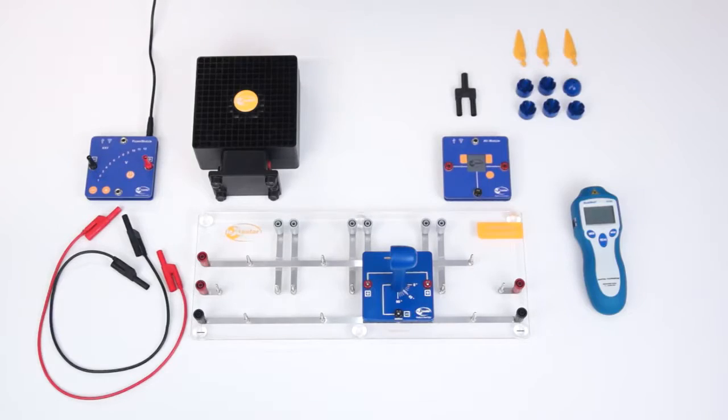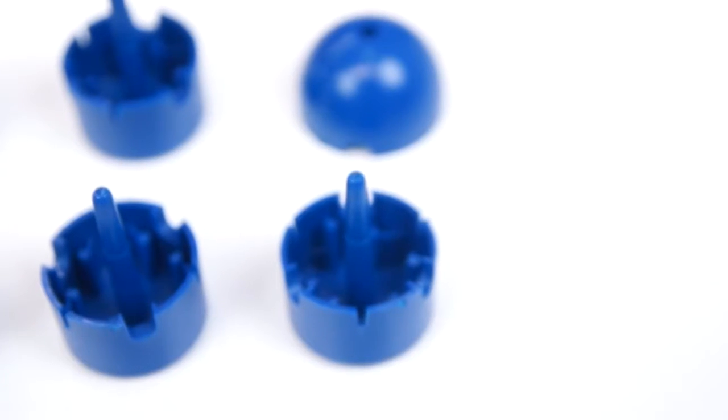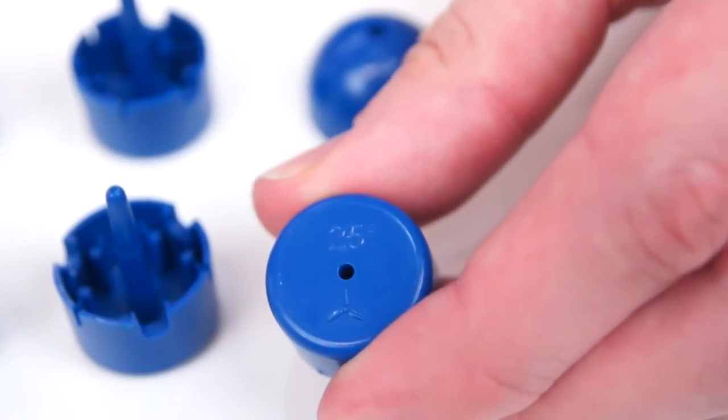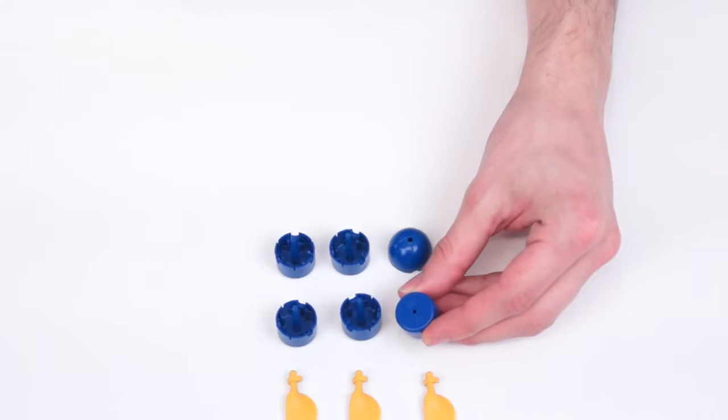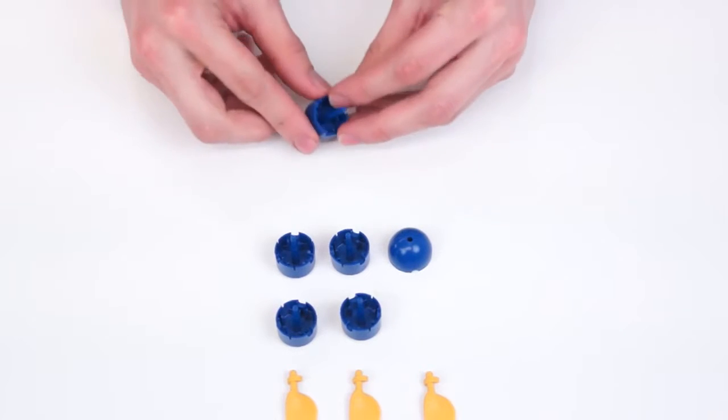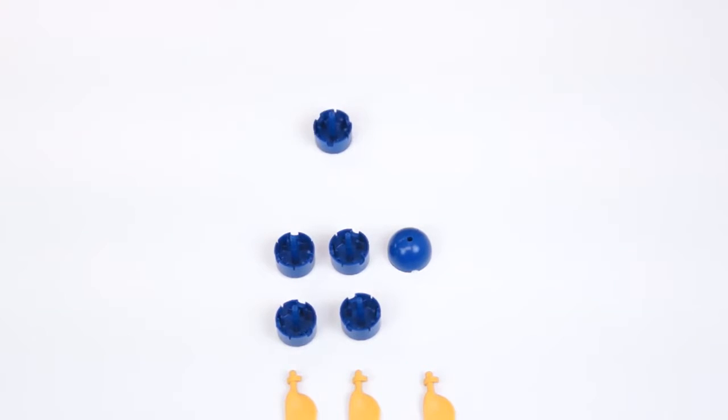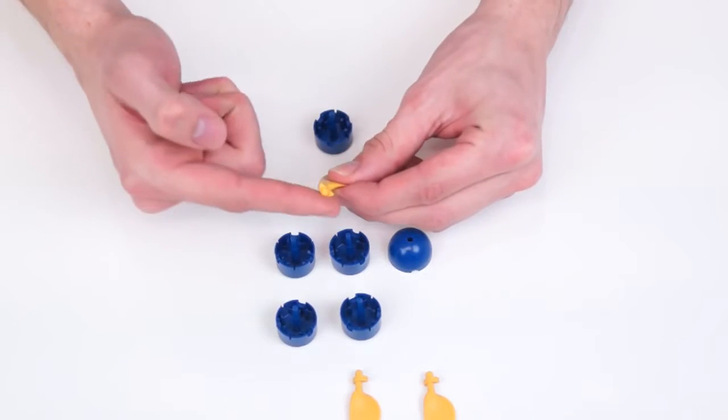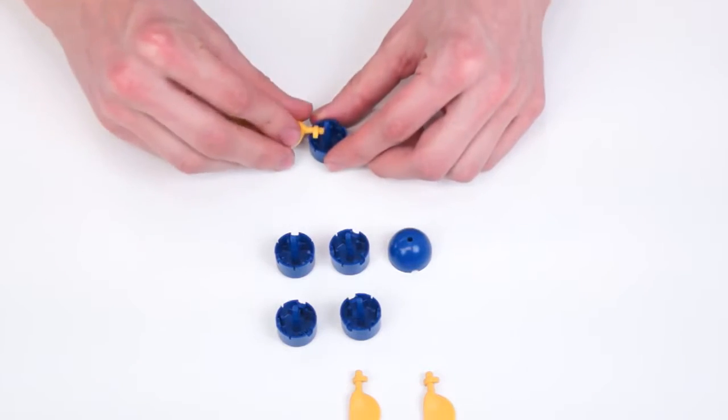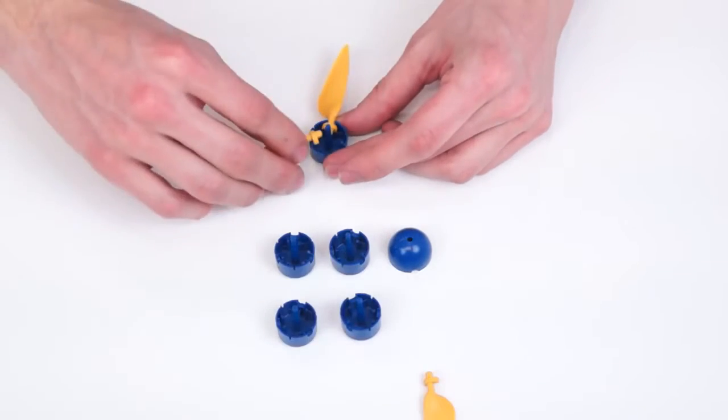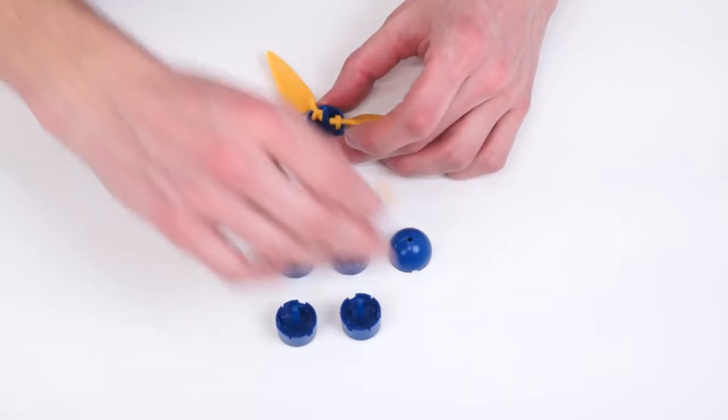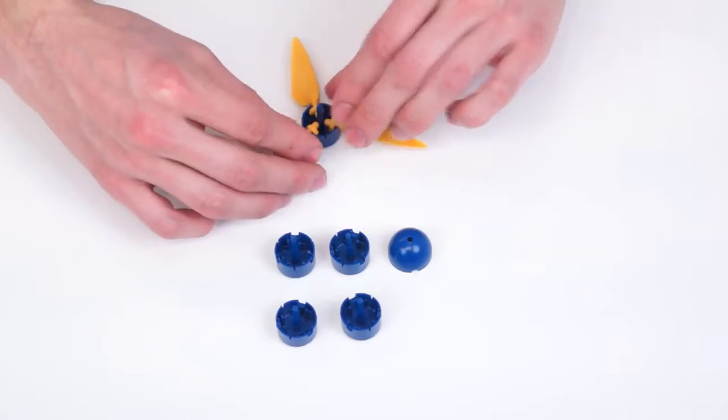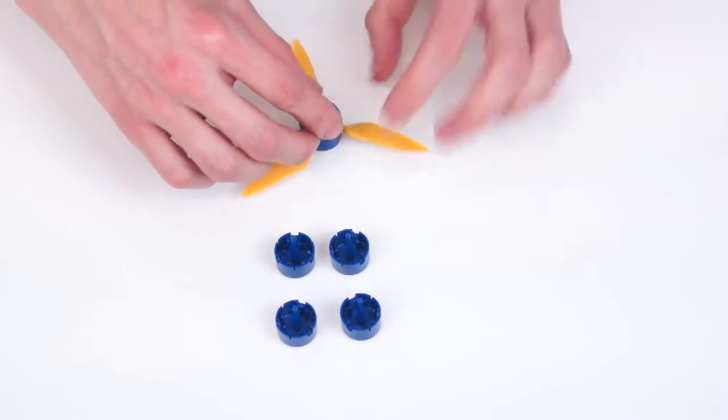To complete our model we then have to assemble the rotor. For this we choose the hub with the 25 degree pitch angle. We put this in front of us turned around on the table. Then we put the three rotor blades in the hub. They have a rounded surface that when laid down needs to face up. The three blades are now in the hub and the hub can be closed finally with the cover.